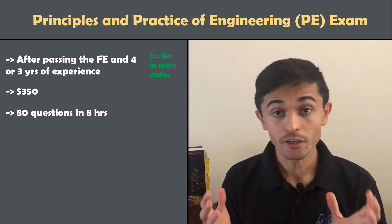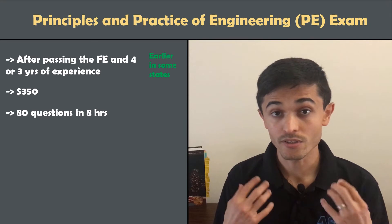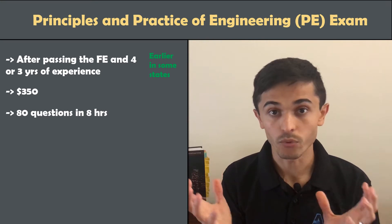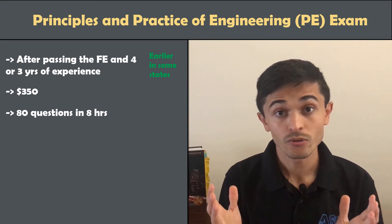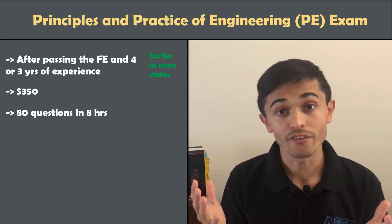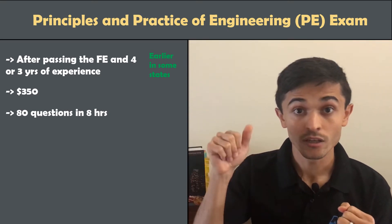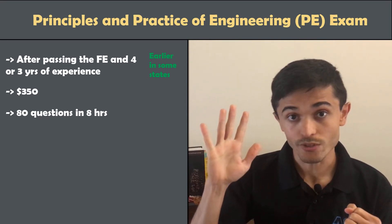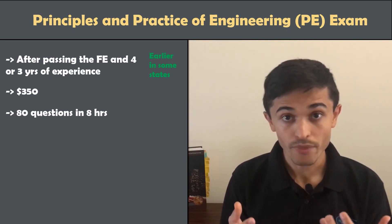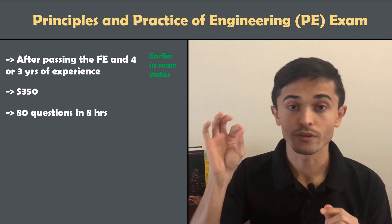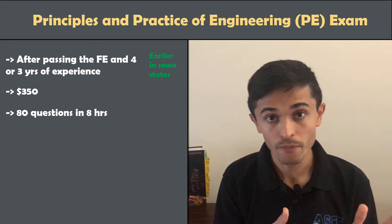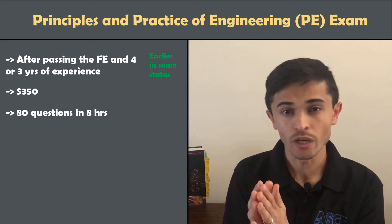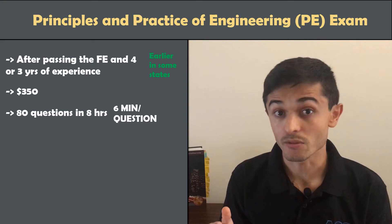The PE exam is composed of 80 questions. I took the civil structural exam. The AM portion is the breadth section, which is the same for everyone — general civil engineering covering all five areas: structural, geotechnical, transportation, construction, and water resources. The afternoon is the depth portion, where you choose one of the five areas. It's 40 questions in the morning and 40 in the afternoon, which works out to about six minutes per question.